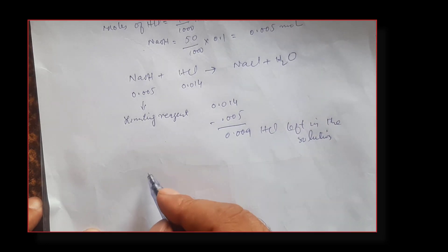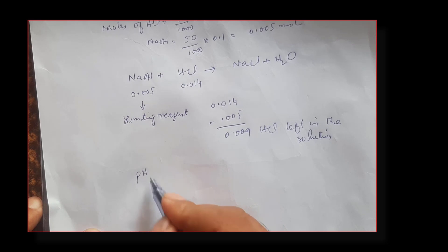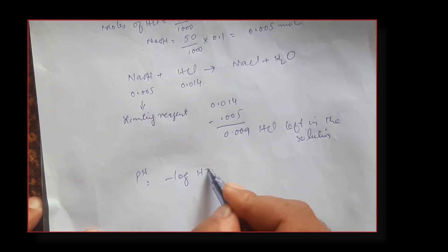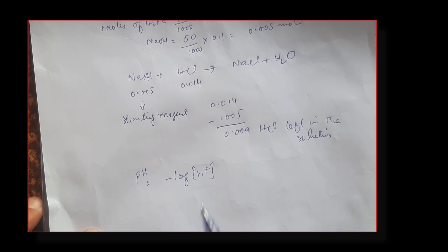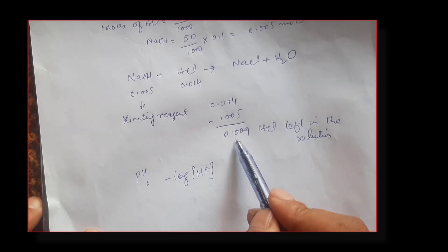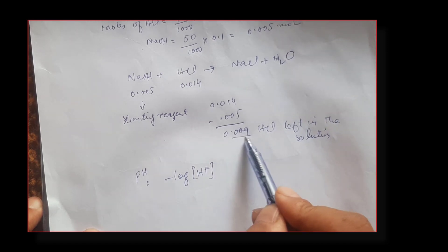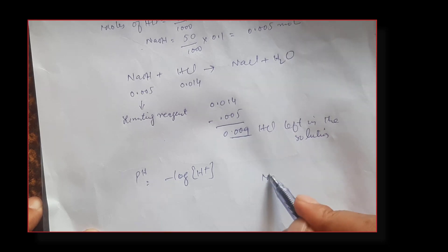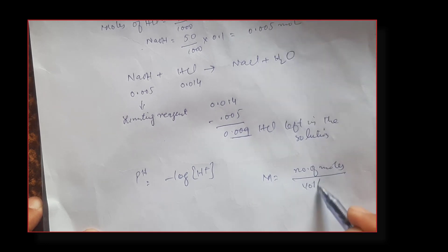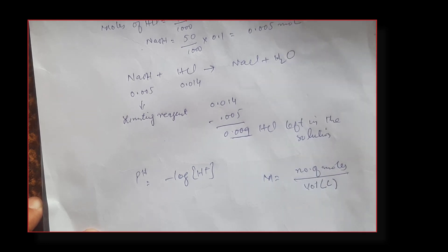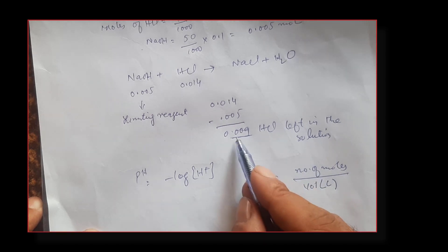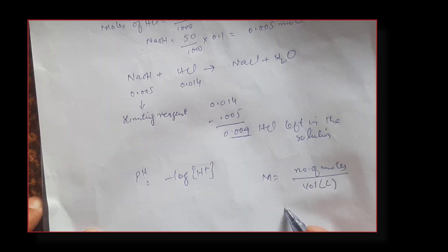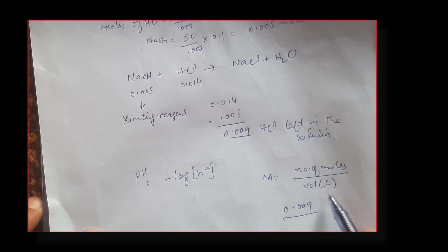We know pH equals negative log of H+ ion concentration. This means we have number of moles and need to convert to molarity. How do we do that? Molarity equals number of moles divided by volume of solution in liters. We have 0.009 moles and need the volume in liters.